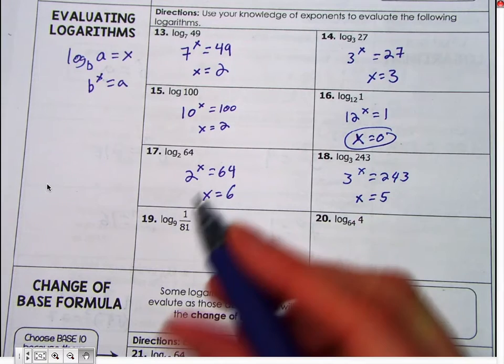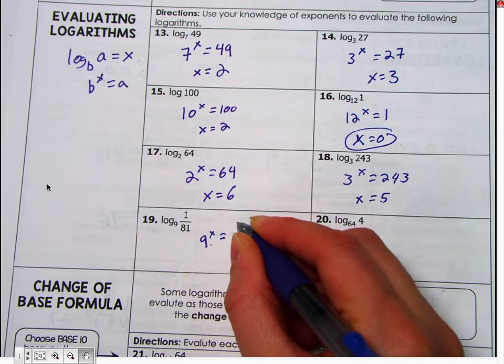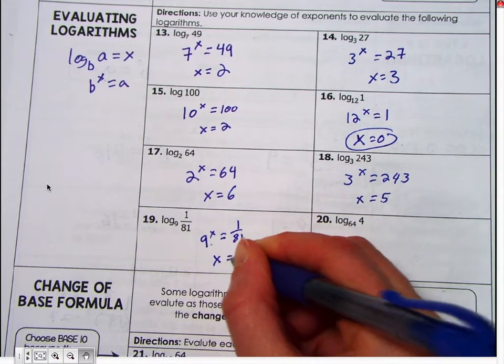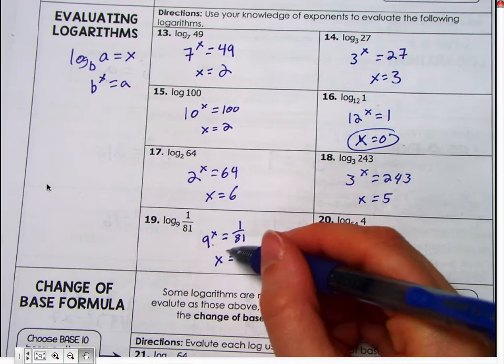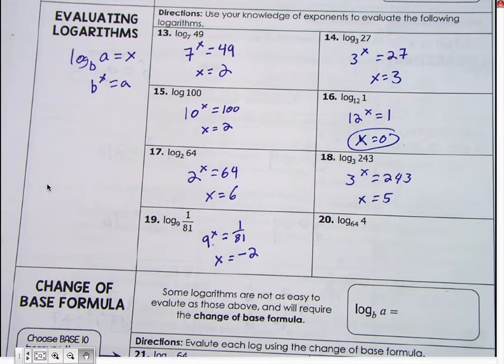So it's going to be nine to the x equals one over eighty-one. Okay, and so what does x have to equal? Okay, so what times what? How many nines do you need to get 81? Nine times nine is 81, right? So we know we need two. But then it becomes a fraction, so we know it has to be a negative fraction. No, because that would be the square root of nine, so that would be three.